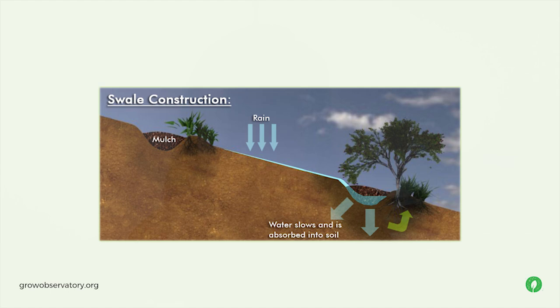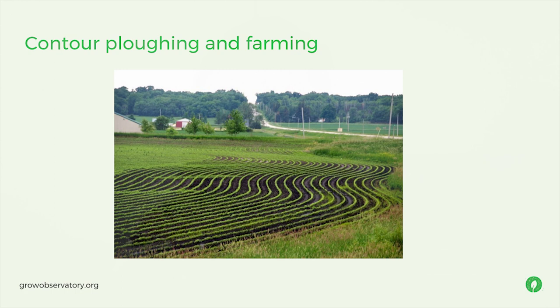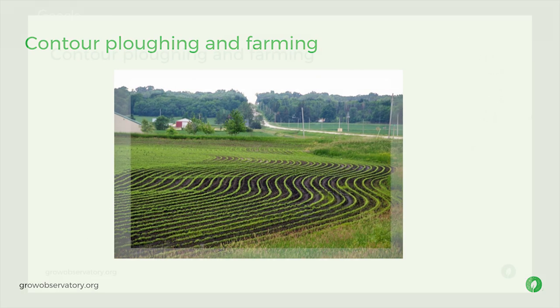Swales can be filled with permeable mulch. Unfortunately, swales are often ineffective against large storms where high flow velocities can overtop the berm. They're also impractical in areas that are very flat, steep, or poorly drained. Contour plowing — or contour farming — is the practice of plowing and planting across a slope following the contour lines, creating spaces between plants where water can collect, reducing runoff and erosion, and promoting infiltration.